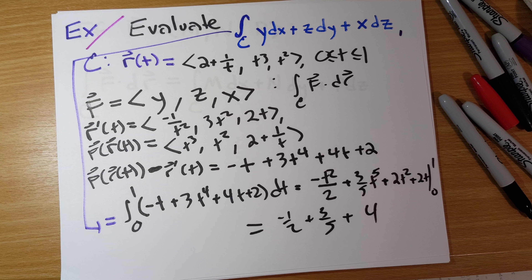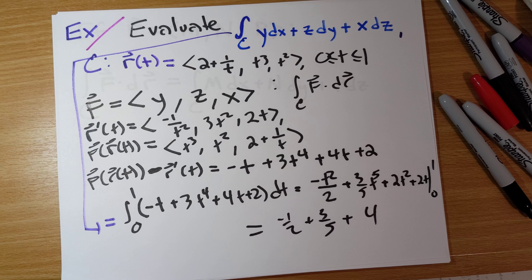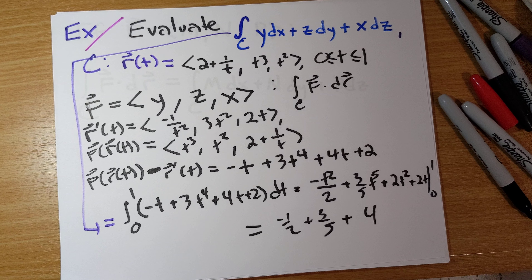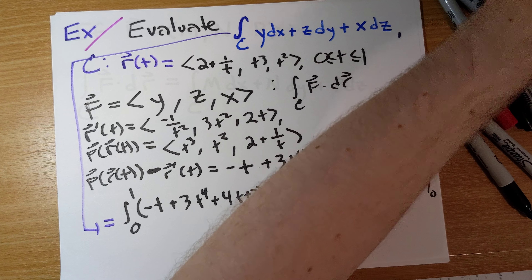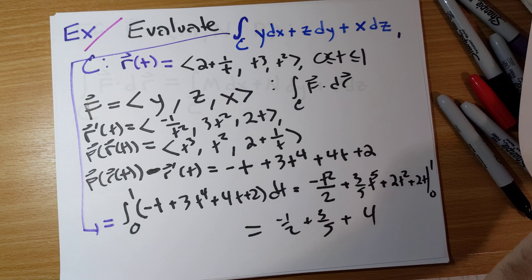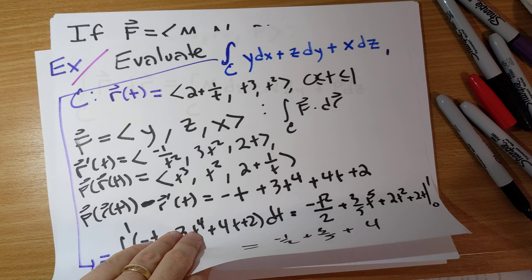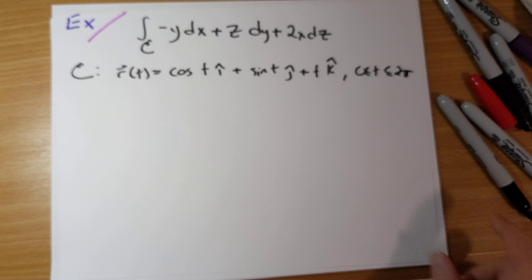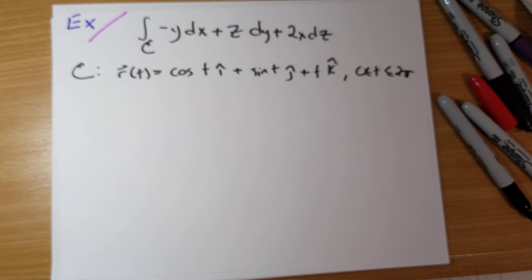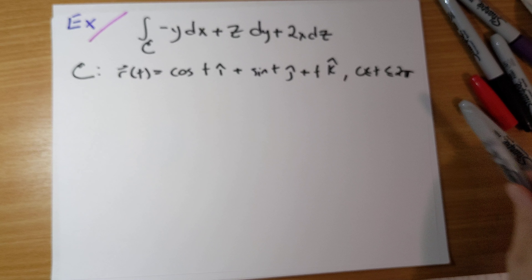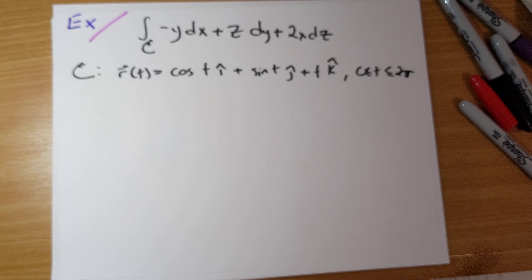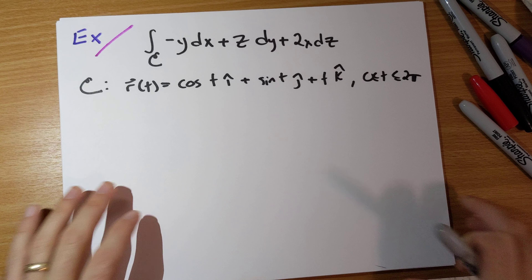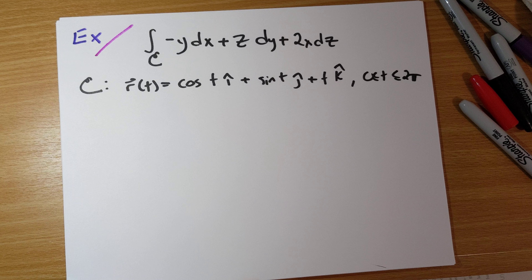So this is one way — we're seeing this notation, which is just another way to express the vector line integral. The textbook sometimes has a different approach, and occasionally I will go for this approach. It's computationally the same thing; you end up with the same answer, the notation just looks a little bit different.